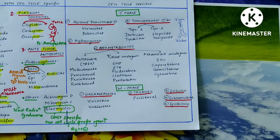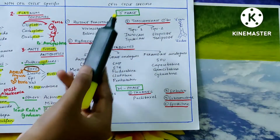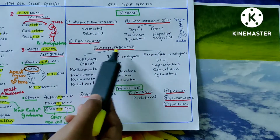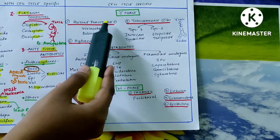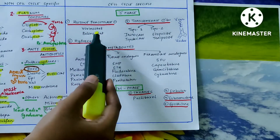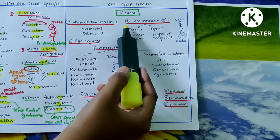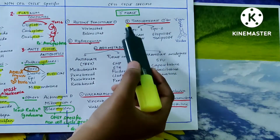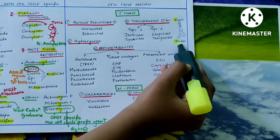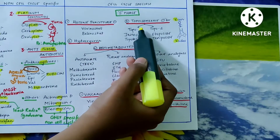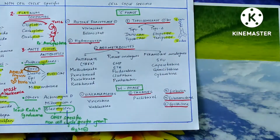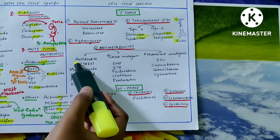Cell cycle specific drugs have S phase and M phase. In S phase there are: histone deacetylase inhibitors, hydroxyurea, topoisomerase inhibitors, and antimetabolites. Histone deacetylase inhibitors include vorinostat and belinostat — 'histone' has 'no' in it, and 'varino' and 'belino' also have 'no.' For topoisomerase inhibitors, topoisomerase-1 is irinotecan; topoisomerase-2 is etoposide and teniposide.